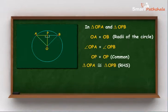Thus, triangle OPA is congruent to triangle OPB by RHS congruence criteria. By CPCT we can say that PA is equal to PB.